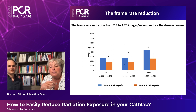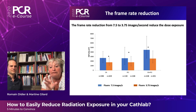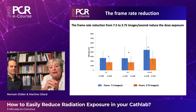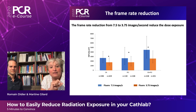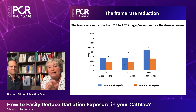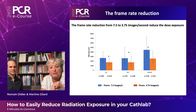Indeed, to compensate for a possible reduction in image quality with a low frame rate, the authorized system developed by GE is an intelligent image chain, allowing good image resolution to be maintained at the 3.75 frame rate. This is very important. As you can see in this graph, we significantly reduce the dose exposure for each type of procedure.